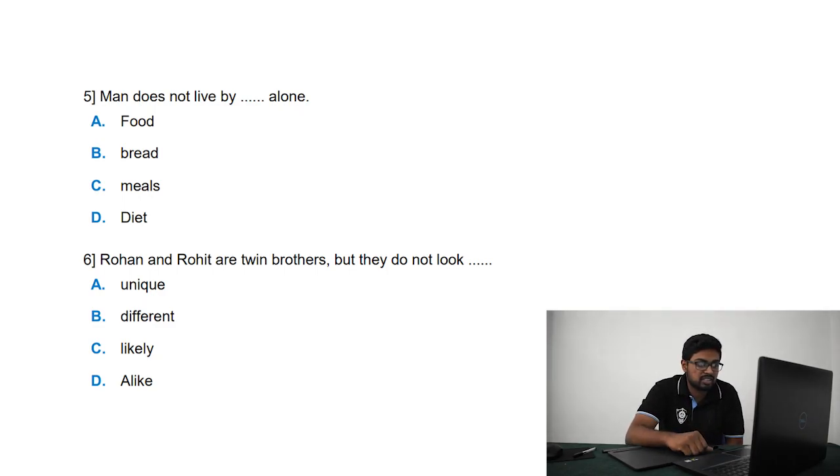The next question is: Rohan and Rohit are twin brothers but they do not look alike. This is a very simple question and the most basic in its form. Unique also makes good sense but it doesn't fit. Different is completely not possible because the word 'but' is used here, which is contradictory. So between unique and alike, alike is a perfect match.